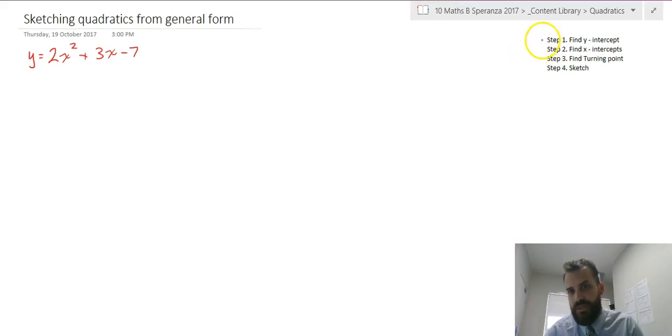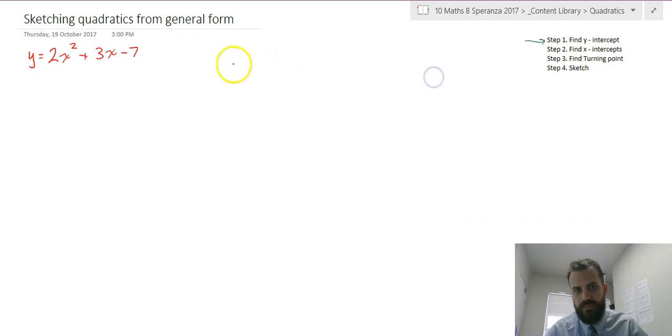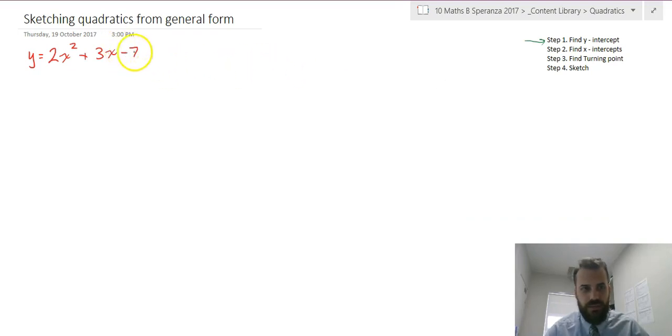Good news is that the first step is really easy. It's finding the y-intercept. Step one: to do that, all you need to do is find your c value. That's your a value, your b value, here's your c value. That's your y-intercept. So step one, y-intercept equals negative 7.